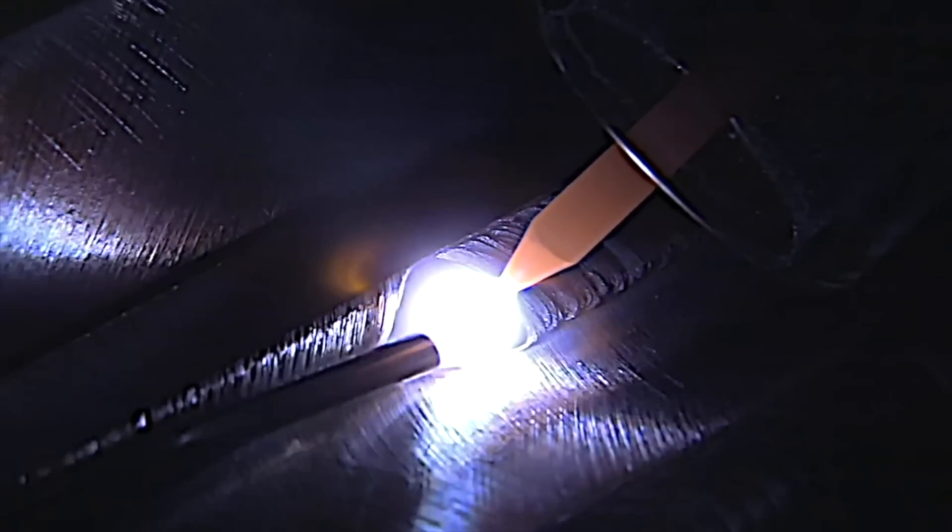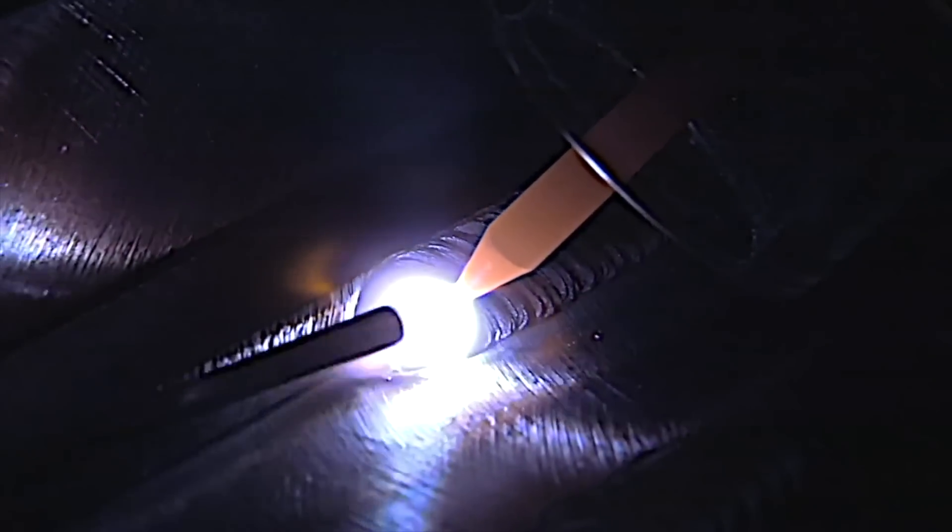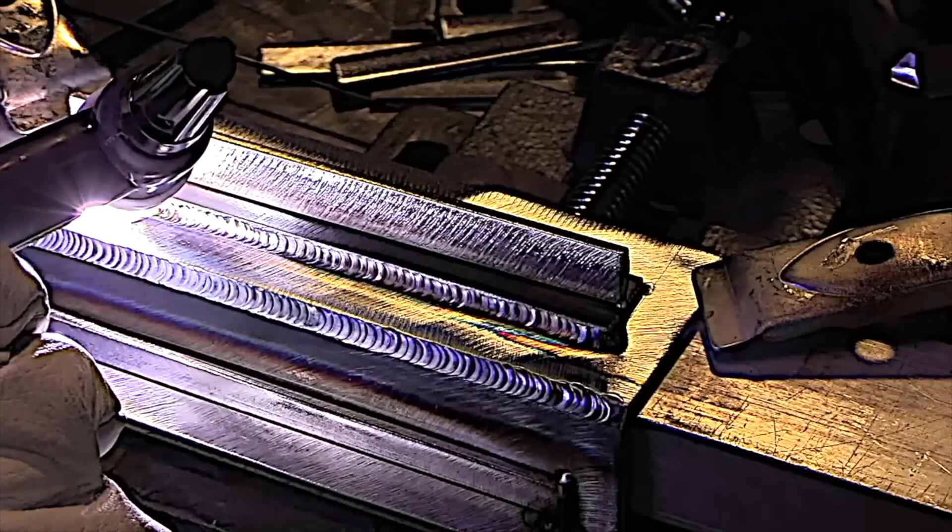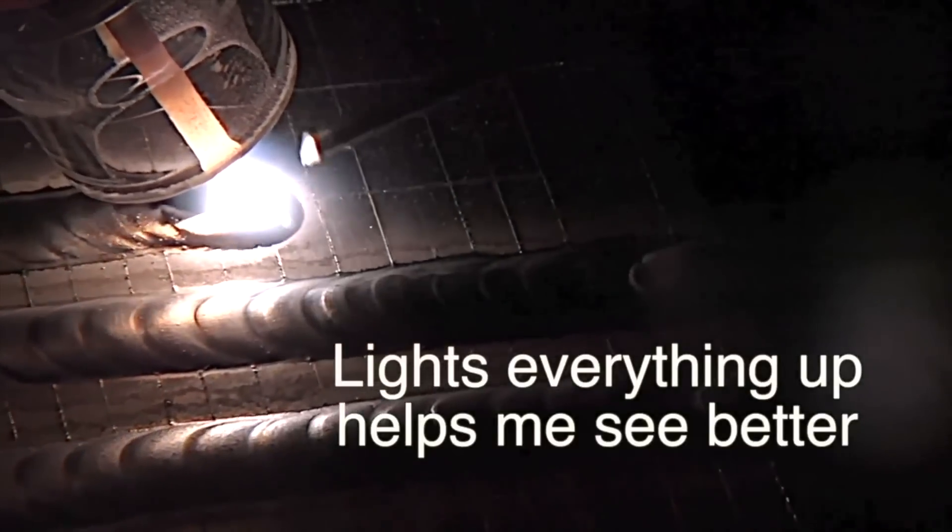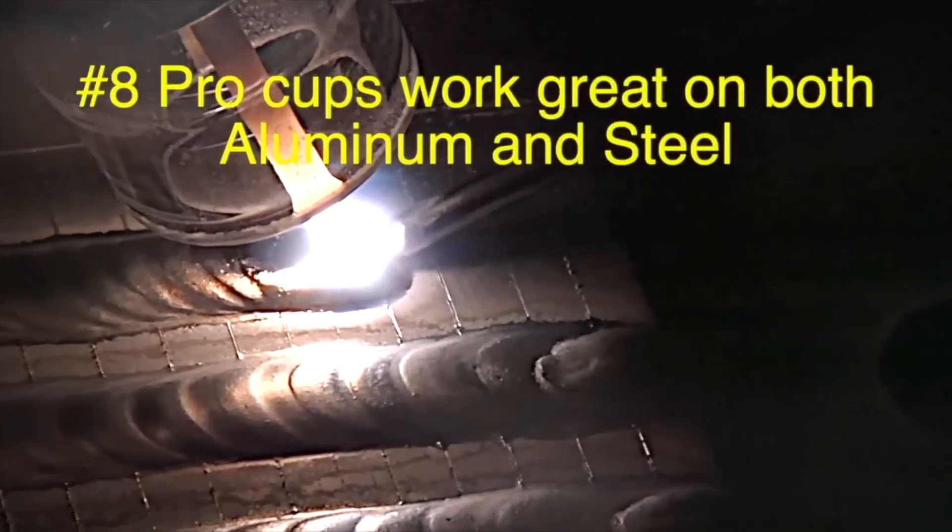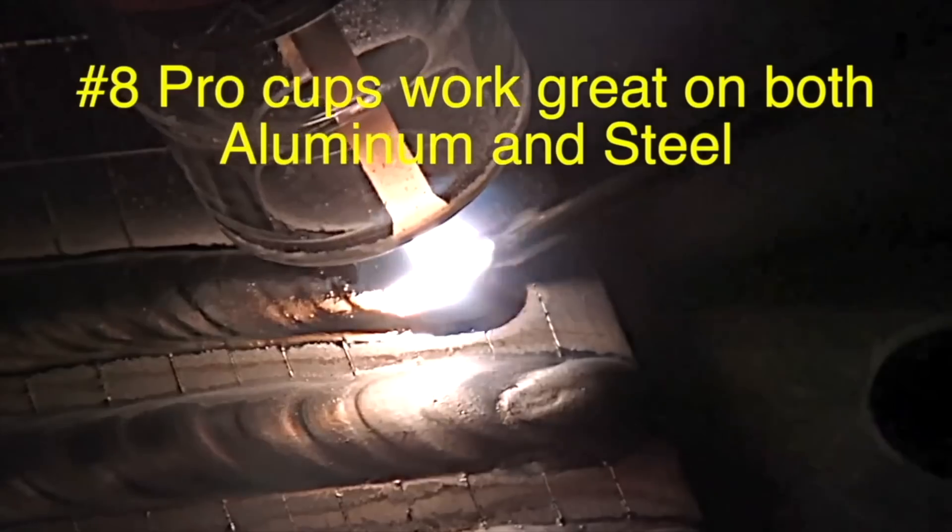I started using clear cups strictly to film. I was kind of skeptical, but I saw right away they really helped me see better. The number 8 clear cup is good for AC and DC. This is a little plate with a bead on plate here with I've scribed lines about an eighth of an inch apart, just so you can see the detail. See how well this cup lights things up. It really helps.